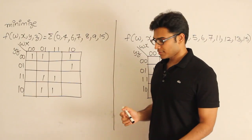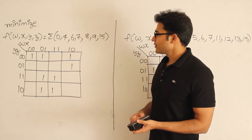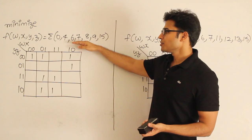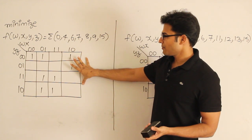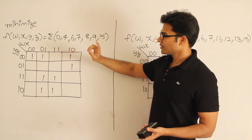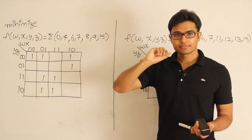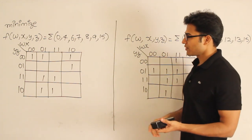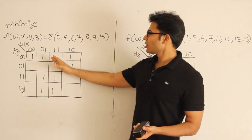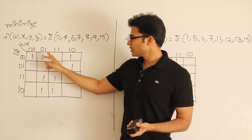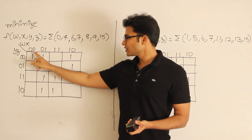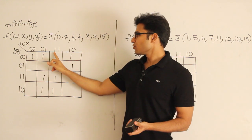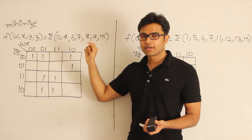Let's try to minimize these functions. Whenever a function is given, you should be able to draw the K-map and then represent it. I'll explain how to do this. The only thing you should be careful about is: after 00, 01, don't put 10 — put 11.